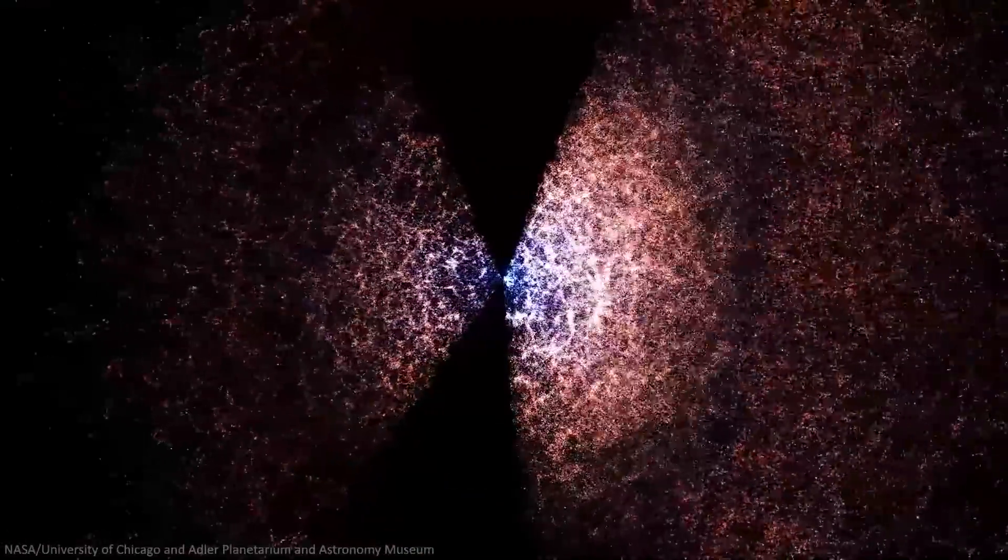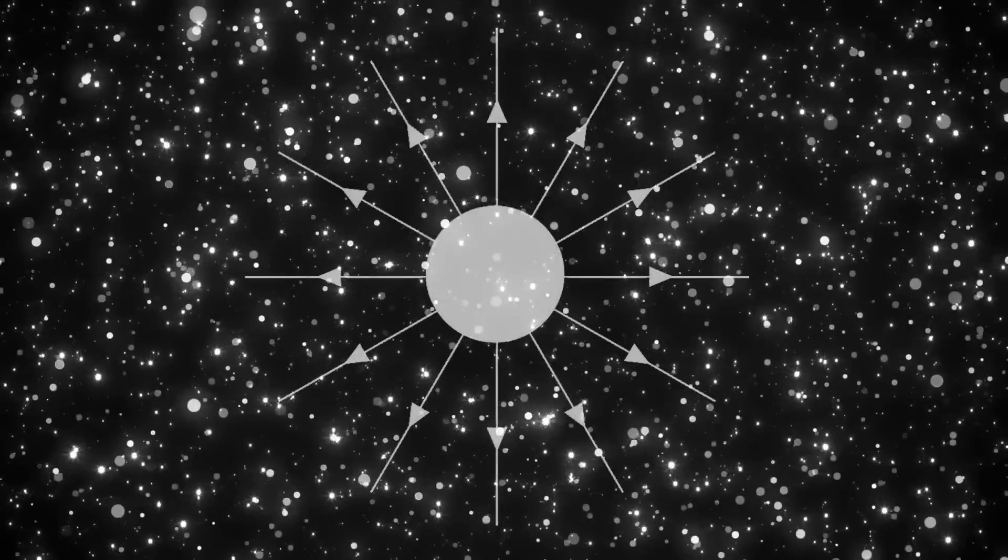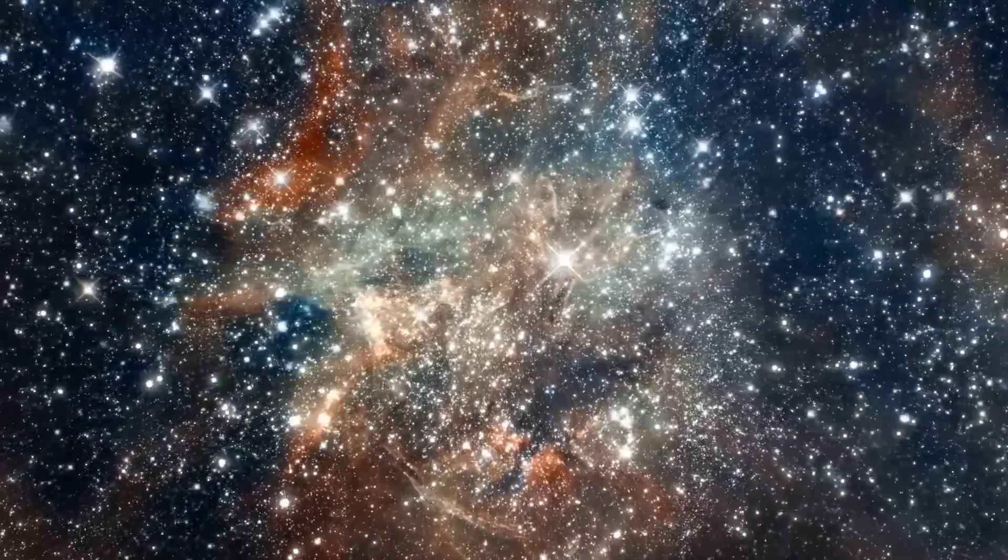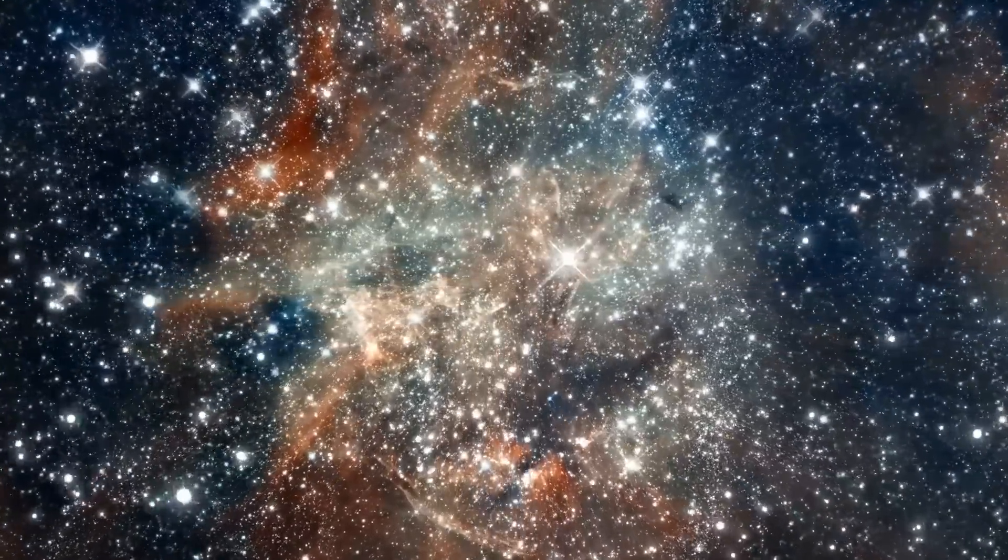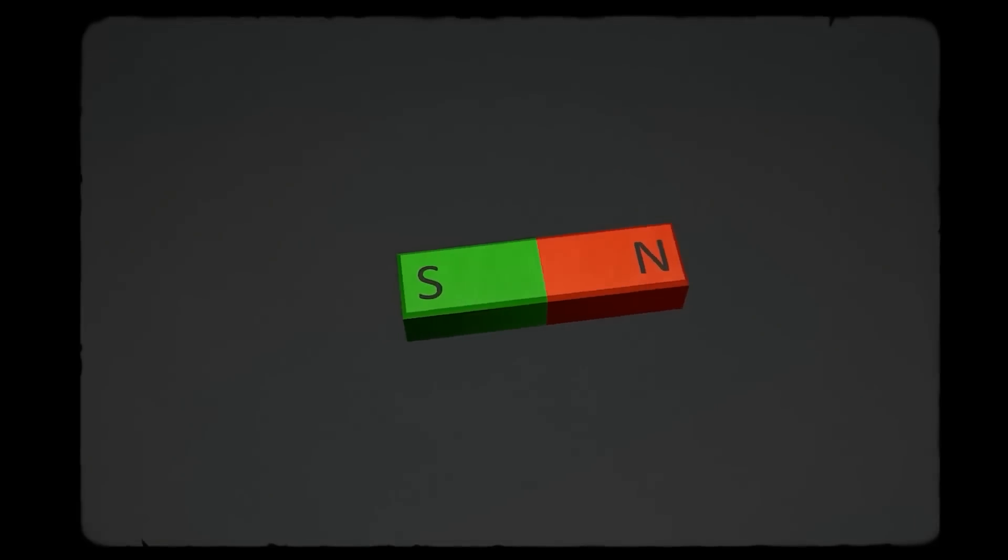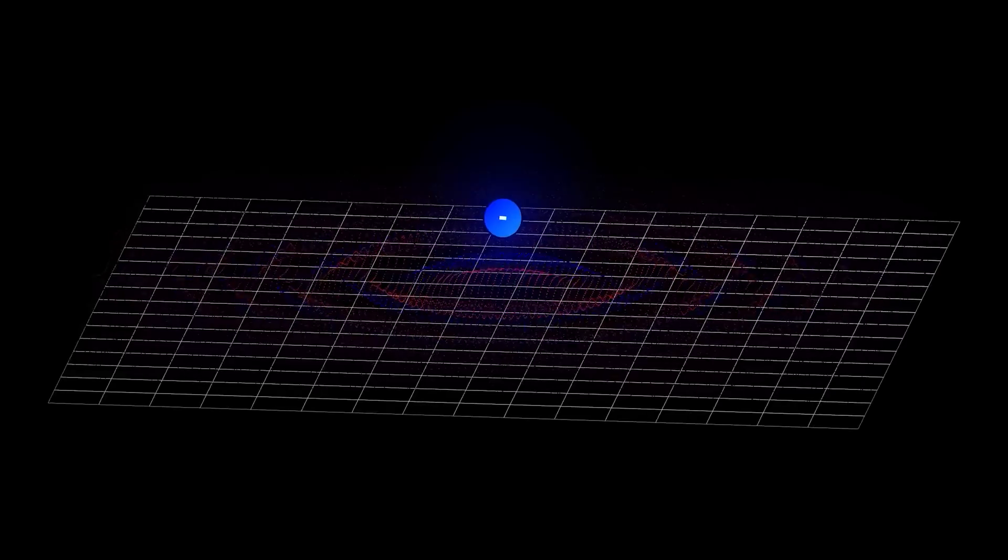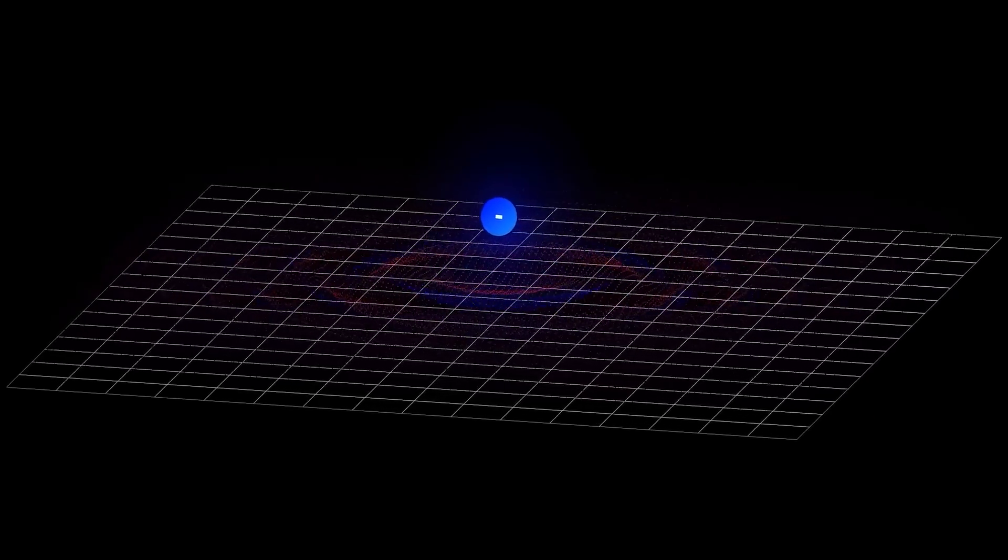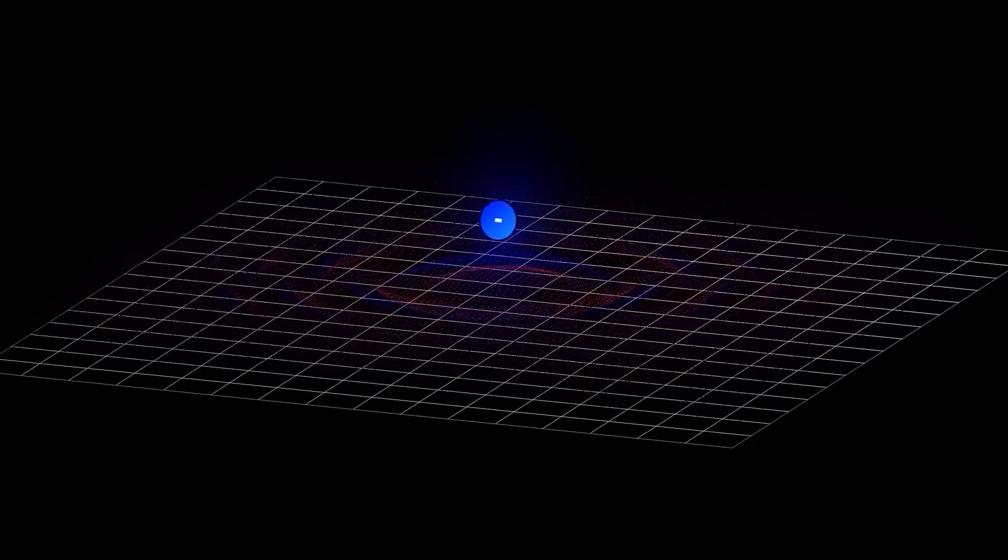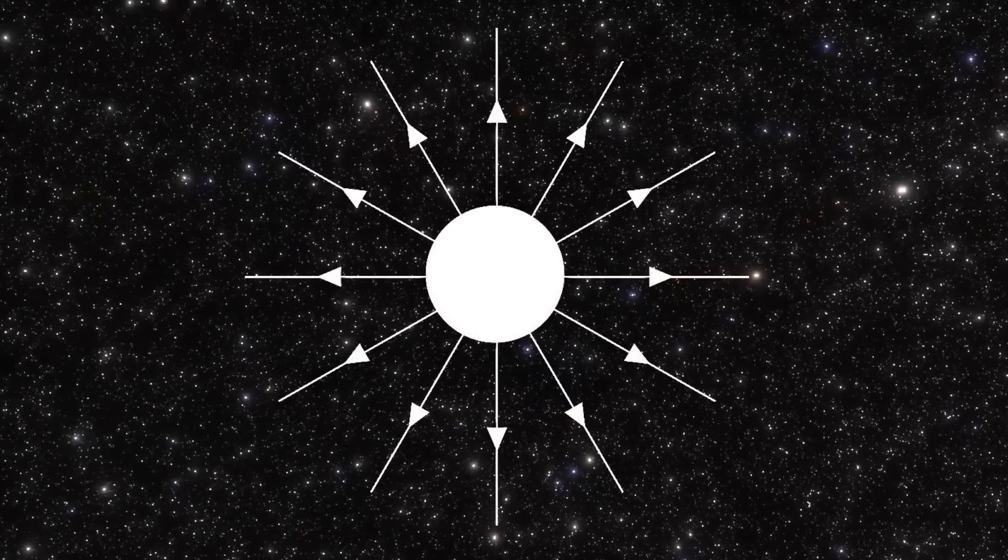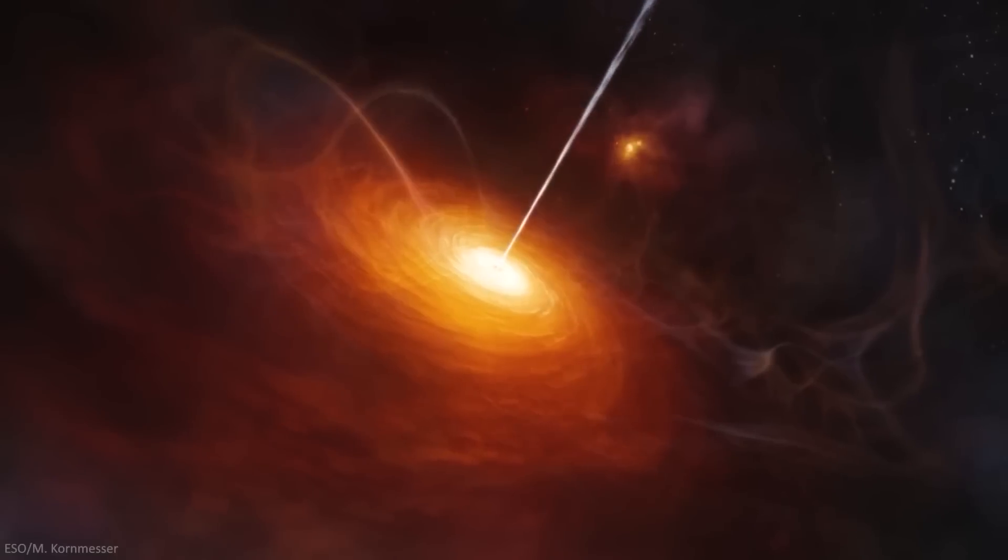Black holes have fascinated scientists and the public for a long time. They form when huge stars collapse under their own gravity, creating a very strong gravitational force that traps everything, even light. At the center of a black hole is a singularity, a point of infinite density where the laws of physics as we know them no longer work. While black holes are famous for swallowing matter and energy, they also have something called an event horizon. This boundary marks a point of no return. Once something crosses the event horizon and enters the black hole, it is thought to be lost forever.